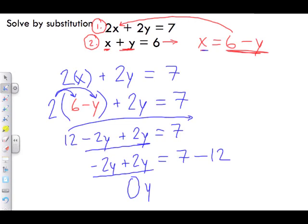When we get something like that—zero equals -5—what this means is that these two lines are in fact parallel to one another.